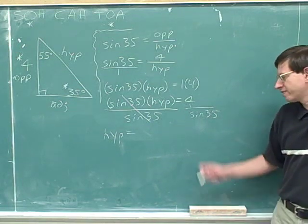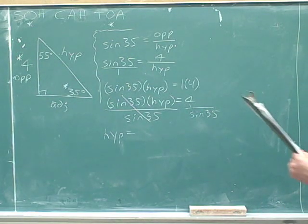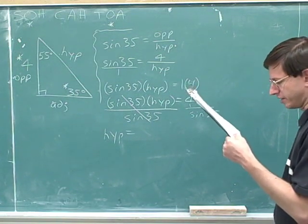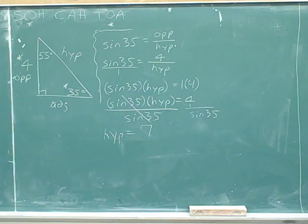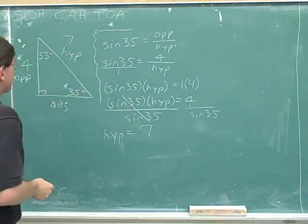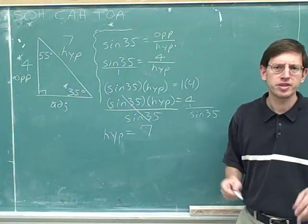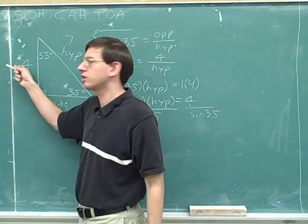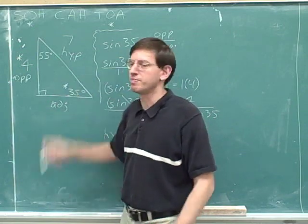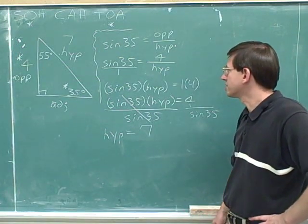You can do this in one step on your calculator — just compute 4 divided by sine 35. That comes out to be approximately 7. So we can label the hypotenuse as having a length of 7. This problem turned out to be different from previous ones: before, I told you the hypotenuse and asked you to find the two legs. Here, I told you one leg and you had to find the other leg and the hypotenuse, so the algebra was a little different.